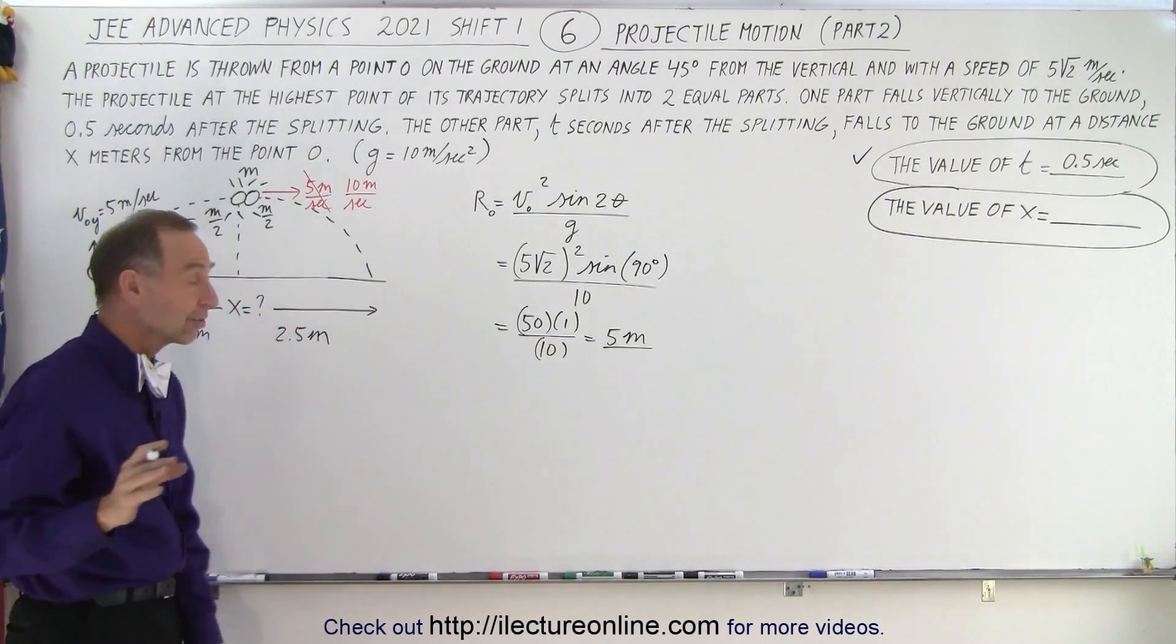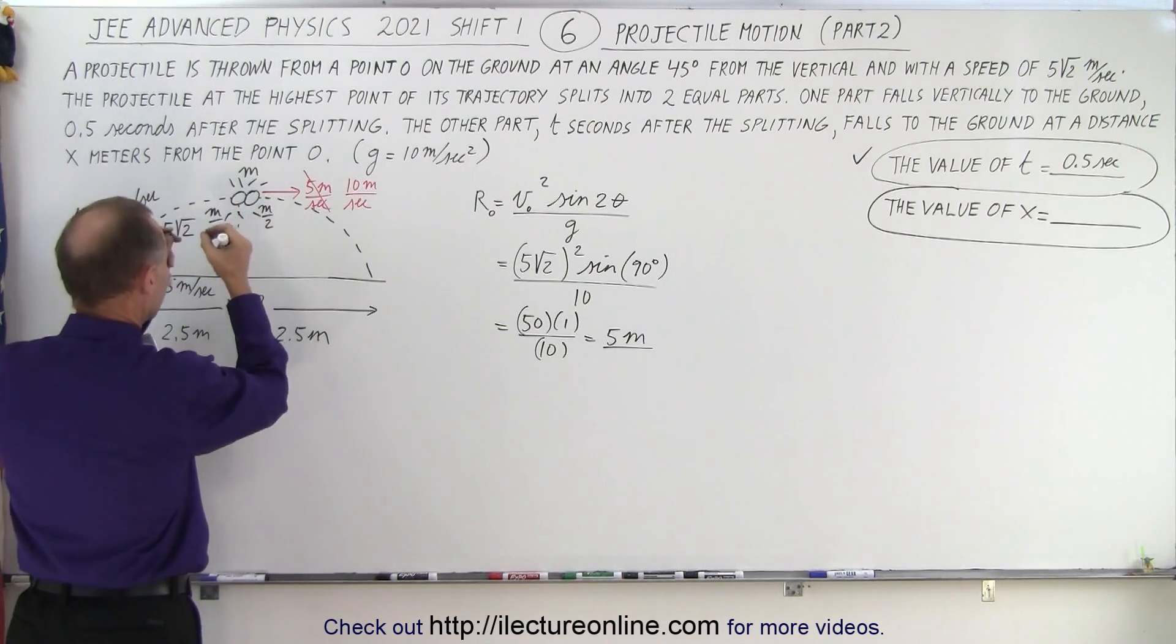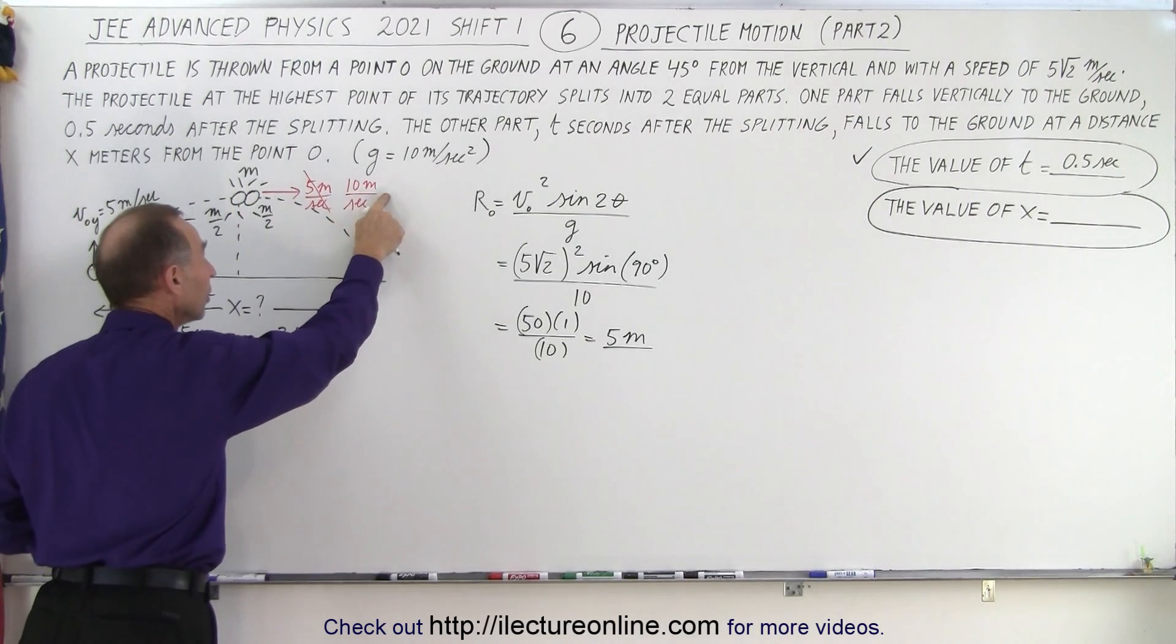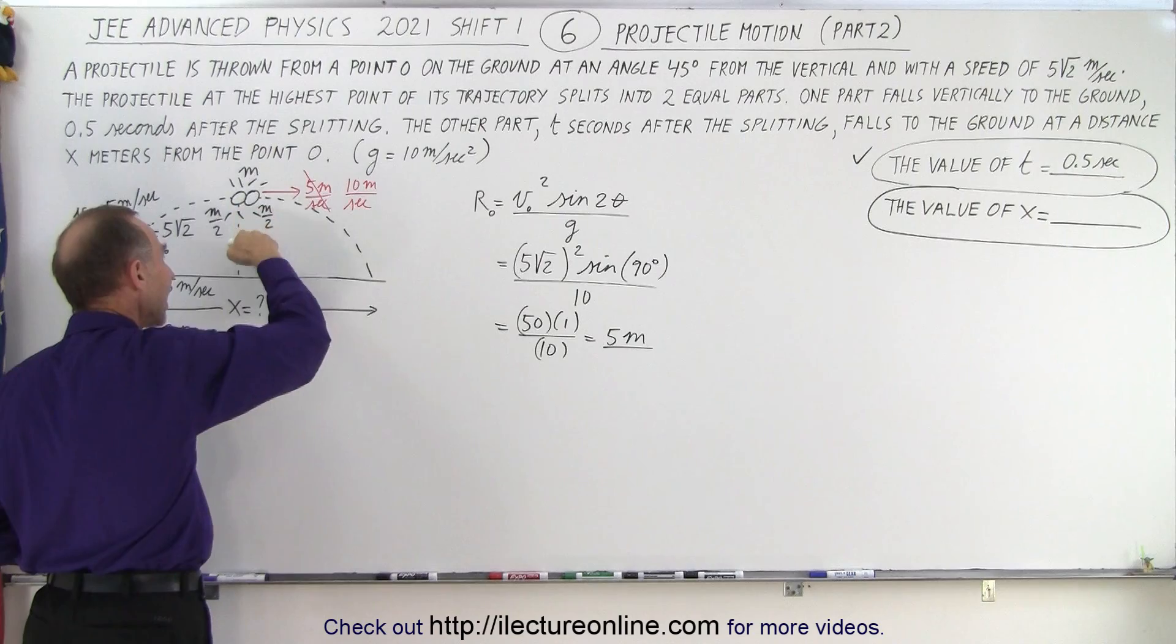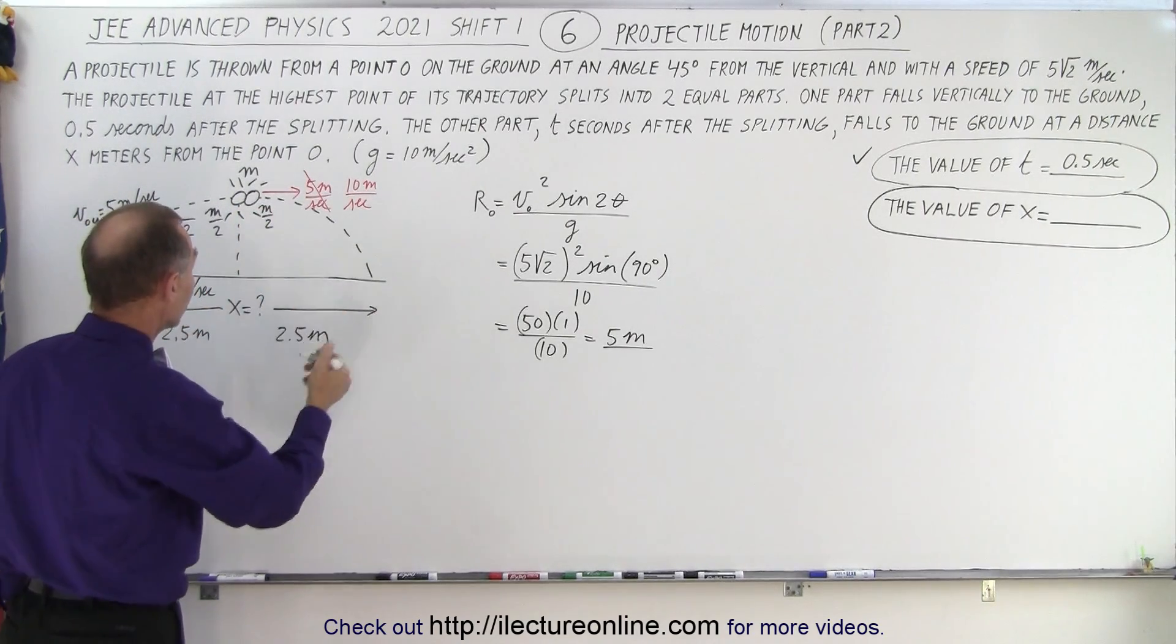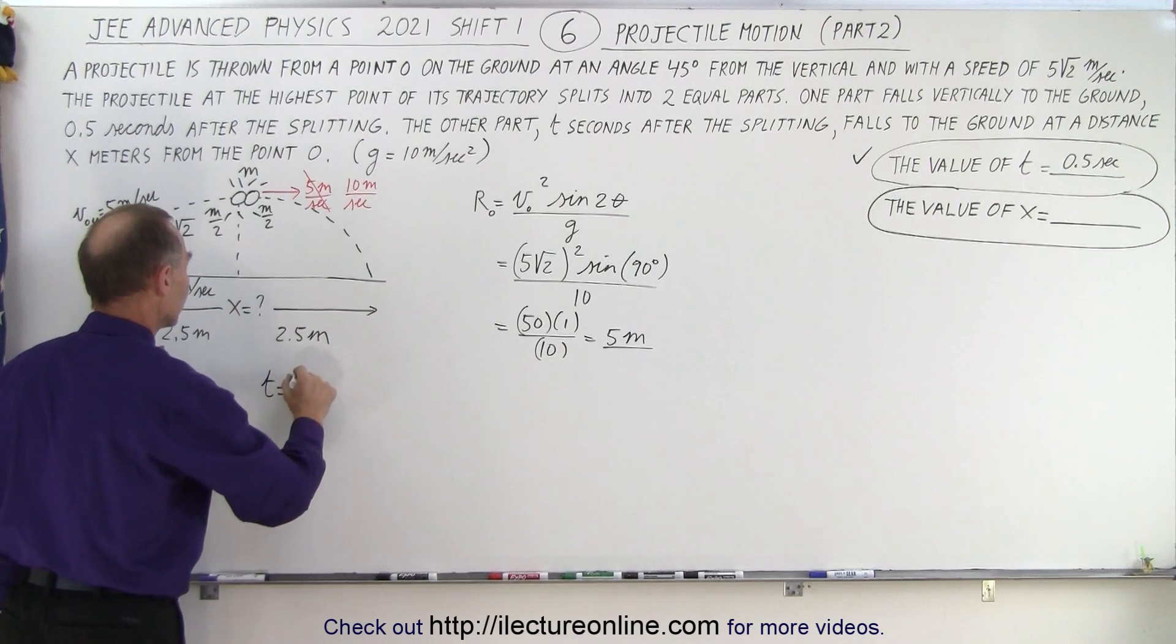But that's not the answer here, because something happens up here, it splits into two pieces. The second piece now has double the speed. It takes the same amount of time for it to come down to the ground, a half a second, so we know t is equal to 0.5 seconds.